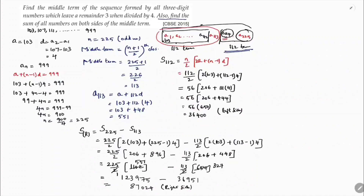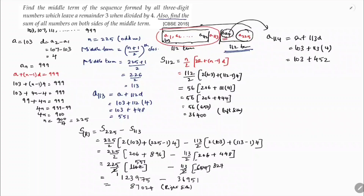Alternatively, for the right side we can find the 114th term directly. a₁₁₄ = a + 113d = 103 + 113×4 = 103 + 452 = 555. So the 114th term is 555, which becomes the new first term for the right-side series.